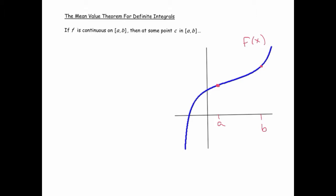As long as that's the case, then at some point on this interval [a, b] there is a c value such that f(c) equals the average value of f(x). We've already defined what the average value was.